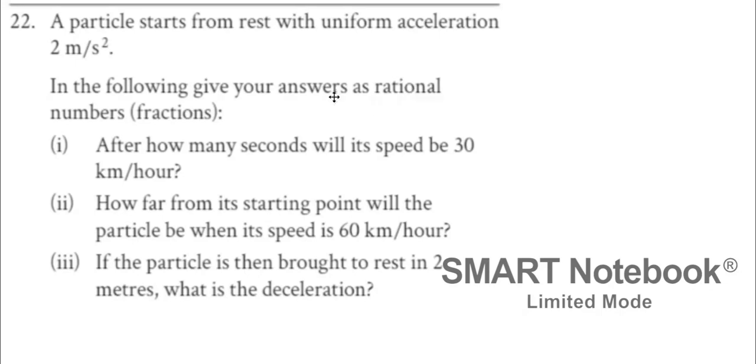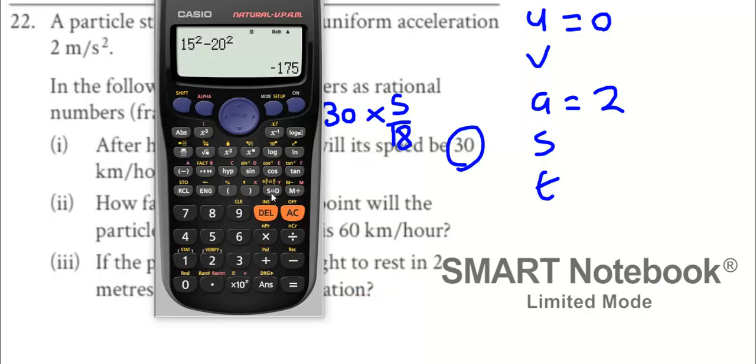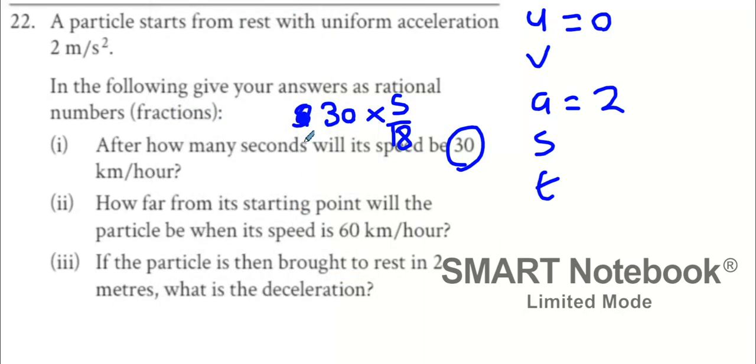A particle starts from rest with uniform acceleration 2. So starts from rest, what does that mean? Its initial velocity is 0 and its acceleration is 2. Give your following answers as rational numbers. After how many seconds will the speed be 30 kilometers an hour? Well look, we did that in the last question. What's 30 multiplied by 5 over 18? Because we learned in the previous question, let's multiply by 5 over 18.